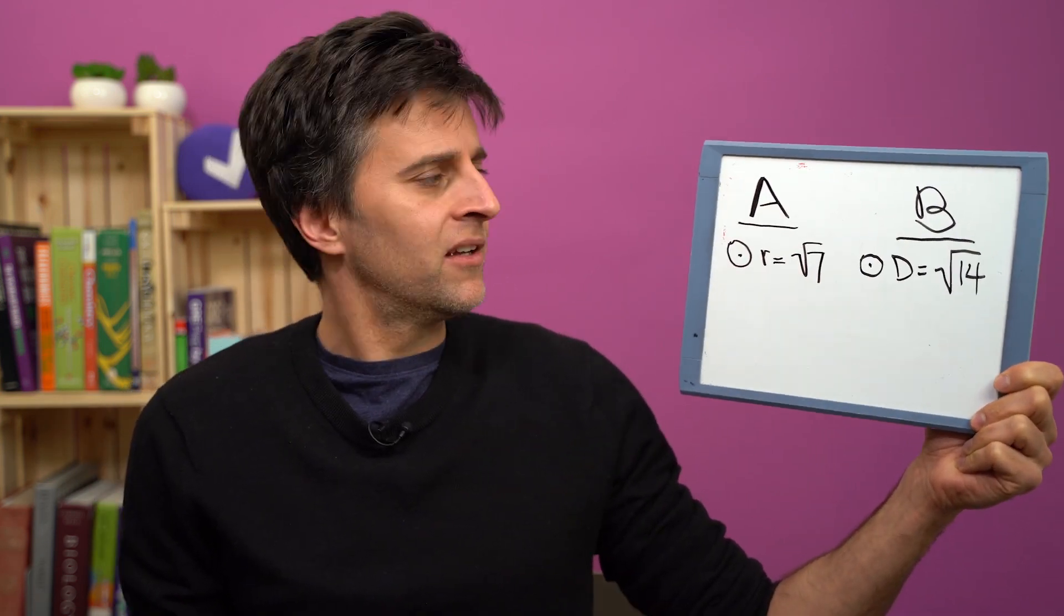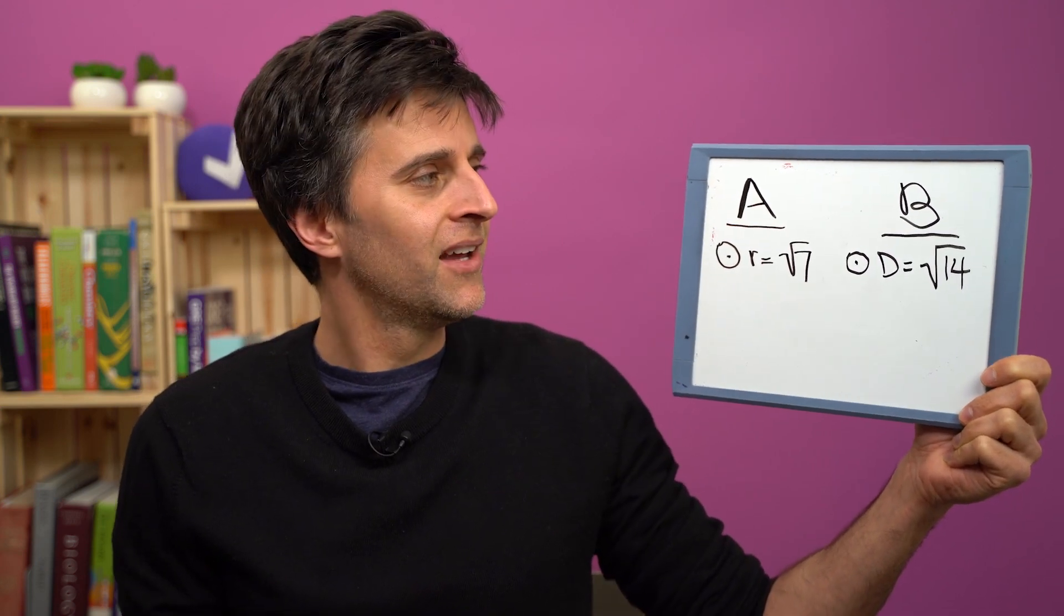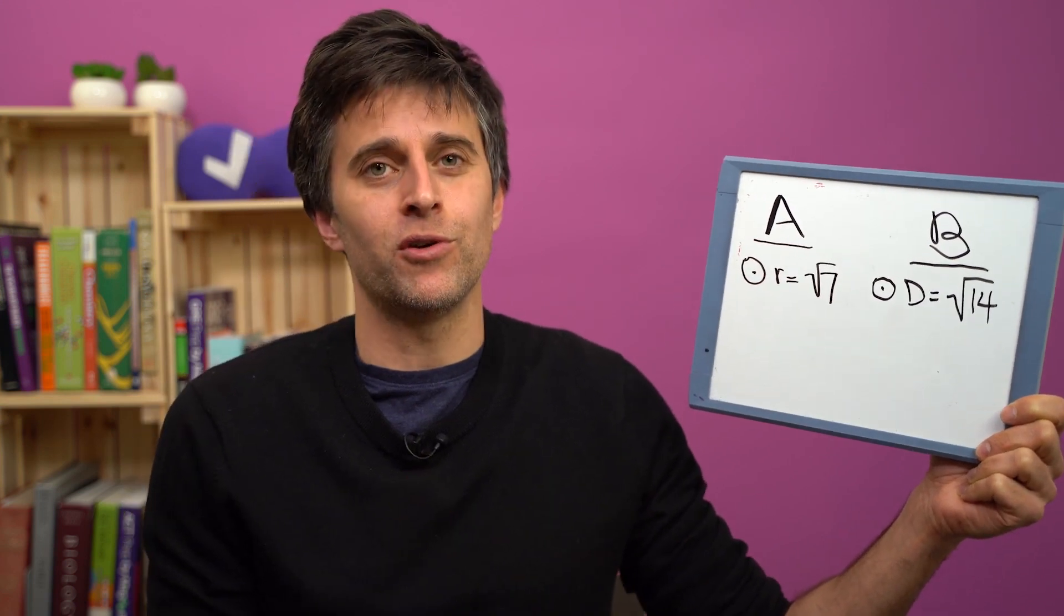We have here column A and column B. Column A has a circle with a radius of root 7, and column B has a circle with a diameter D of root 14.